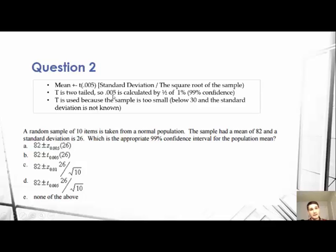The T is two tailed so 0.005 is calculated by taking half of 1% because it's a 99% confidence interval. So 100% minus 99% is 1%, and then we multiply that by half to get our 0.005 because it's that one tailed test.